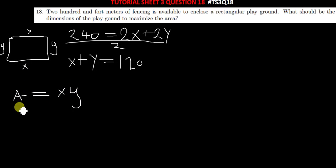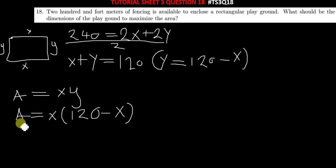Let's make y the subject from this one. If we make y the subject, we're going to have y equals 120 minus x. So we're going to have x multiplied by 120 minus x.